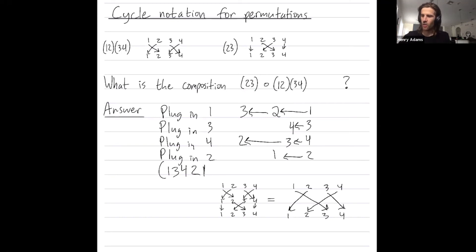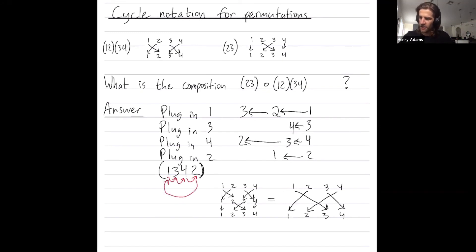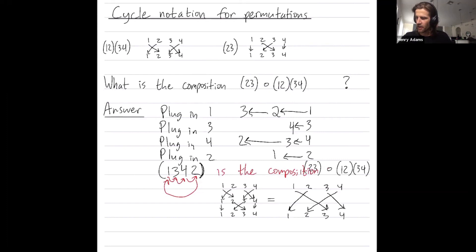Don't write a one here — you already have a one that appeared. Leverage the fact that this is cycle notation: I can just close the parentheses. This means one gets mapped to three, three gets mapped to four, four gets mapped to two, and two gets mapped to one. So our final answer is the four-cycle (1 3 4 2), which is the composition of those elements.